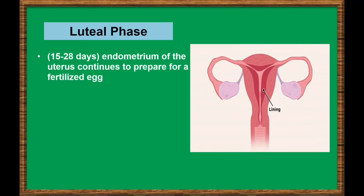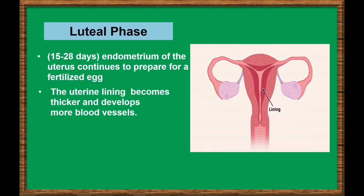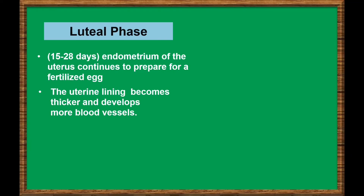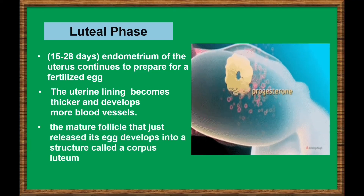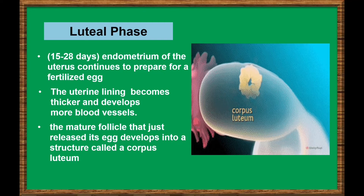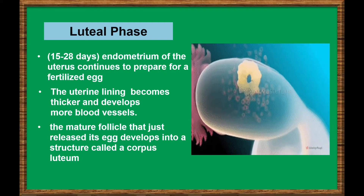Following ovulation, the luteal phase begins. During the luteal phase, the endometrium of the uterus continues to prepare for a fertilized egg. The uterine lining becomes thicker and develops more blood vessels. At the same time, the mature follicle that just released its egg develops into a structure called the corpus luteum.